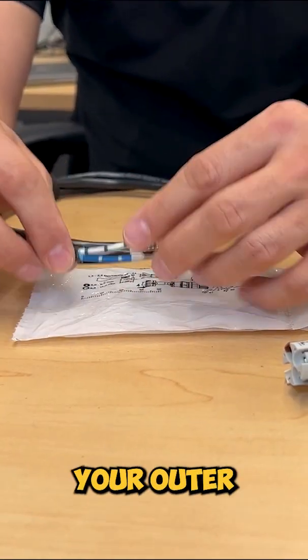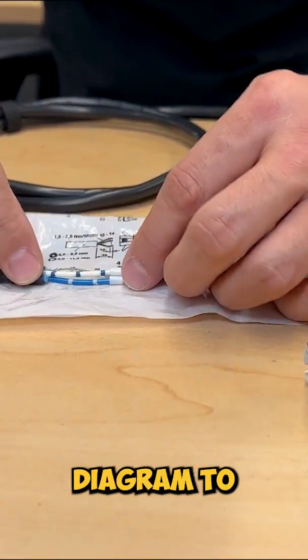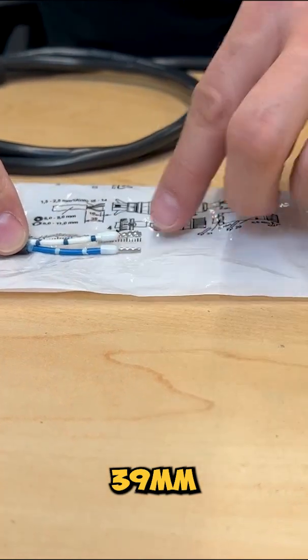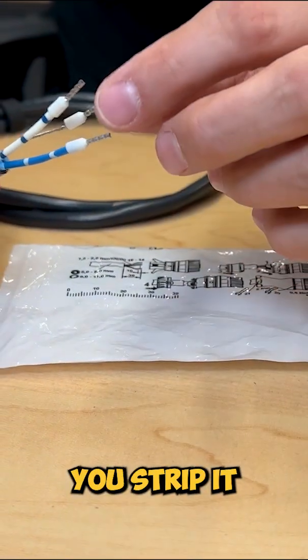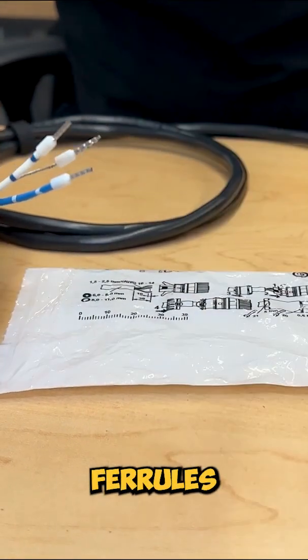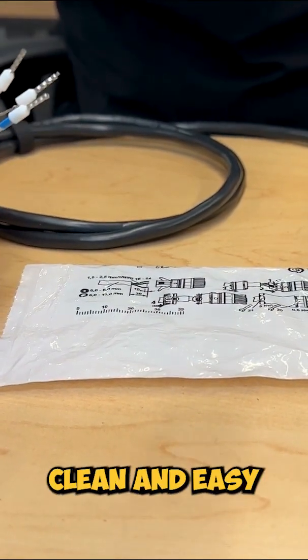Then you trim your outer sheathing using this diagram to 39 millimeters, and then you trim each wire. You strip it to 10 millimeters, and I put ferrules on here just to make the installation clean and easy.